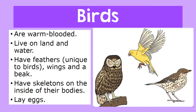The fifth group of vertebrates are the birds. Birds are warm-blooded. They live on land and water. They have feathers, which are unique to birds. They also have wings and a beak. They have skeletons on the inside of their bodies, and they lay eggs.